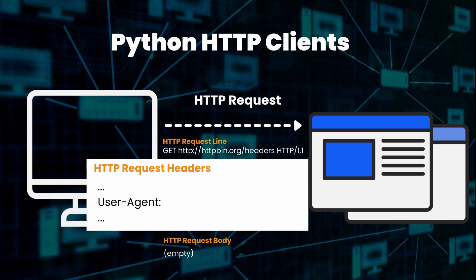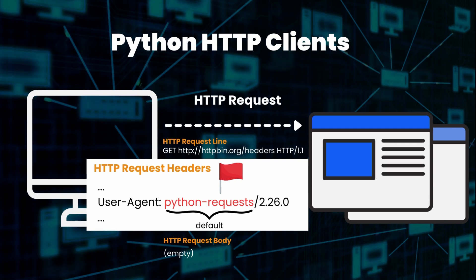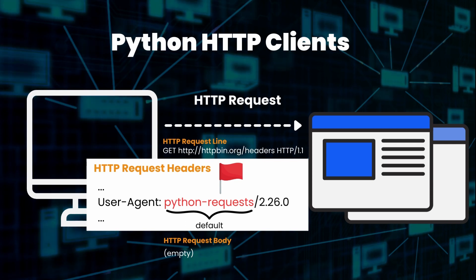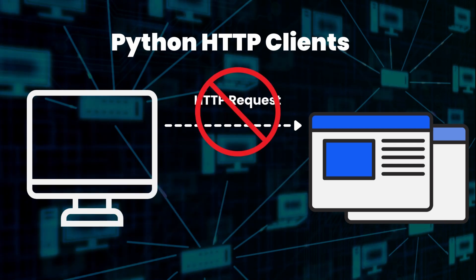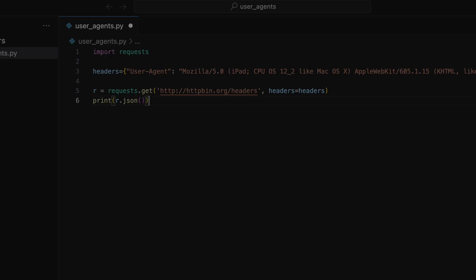In the case of most Python HTTP clients like Python Requests, when you send a request, the default settings clearly identify that the request is being made with Python Requests in the user agent string. This user agent will clearly identify your requests as being made by the Python Requests library, so the website can easily block you from scraping. That is why we need to manage the user agents we use with Python Requests.